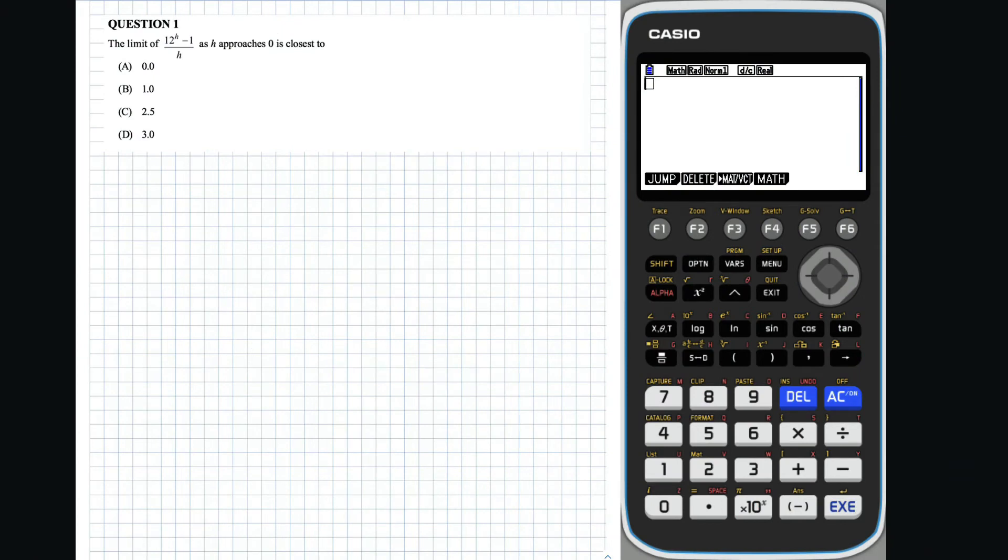Question 1: Firstly, if we look at all the options, we can see that they are all numbers, so we will assume the limit exists. We can then calculate the value of the expression for a positive value of h. Using this method of entry ensures the same value of h is substituted in. The answer calculated is 2.48, which is closest to 2.5, so the answer is C.